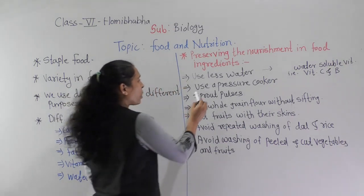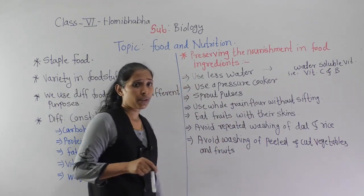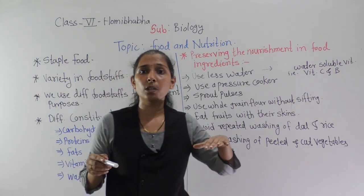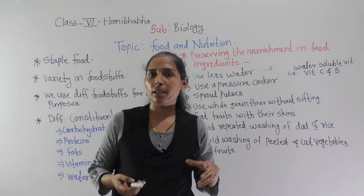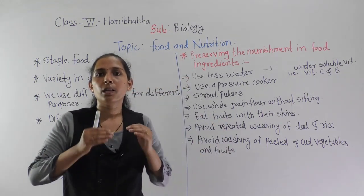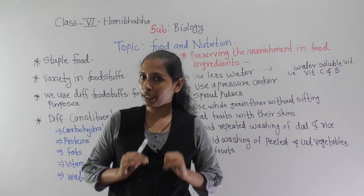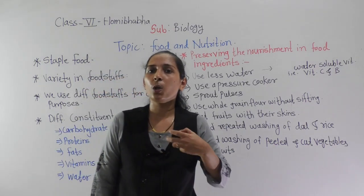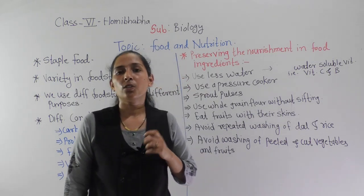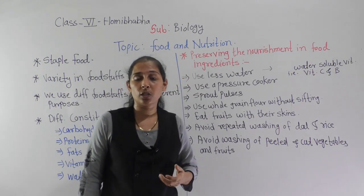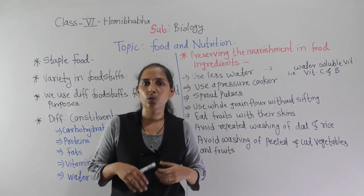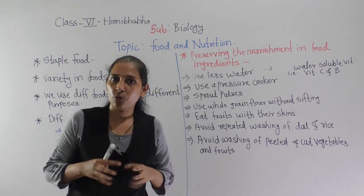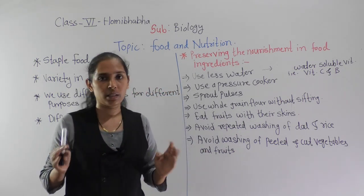Next, use a pressure cooker, or cover the food container, to avoid the loss of nutrients. Also, cook food at a low temperature. If you cook food at a very high temperature, the water-soluble vitamins and minerals will get destroyed.